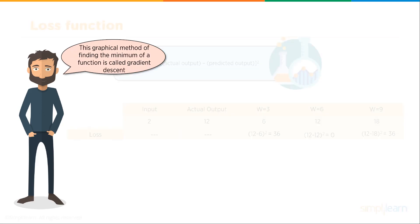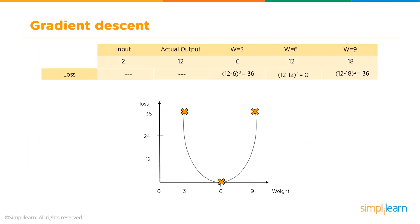We now plot a graph for the weight versus loss. It always helps to have a nice visual of what's going on here. This graphical method of finding the minimum of a function is called gradient descent. You can see as we come in here, we graph the loss. We have 36 for 3 and 36 for 9. We happen to guess 6, which was the correct answer right in the middle. It forms a nice little parabola with a mark right in the middle. As a human being, we can look at that and say, ah, the answer is 6.